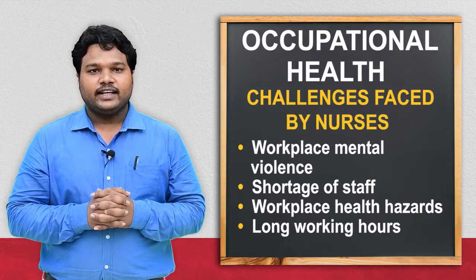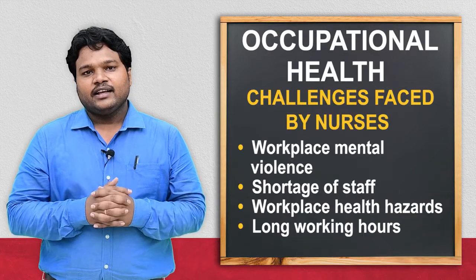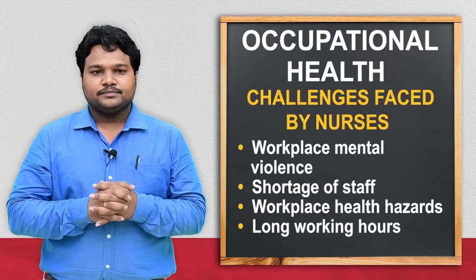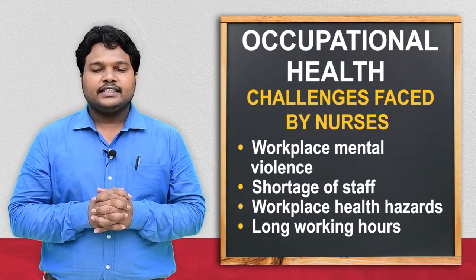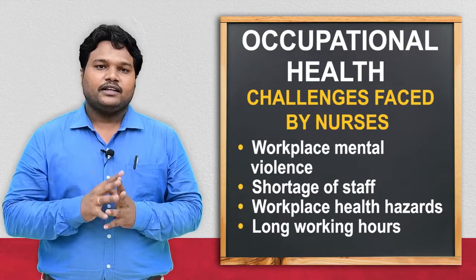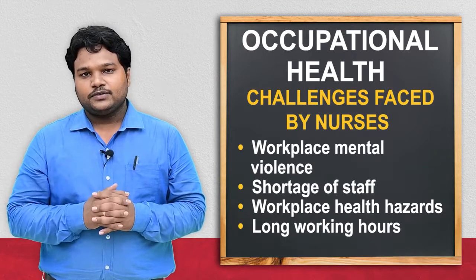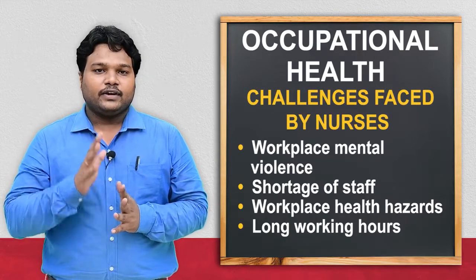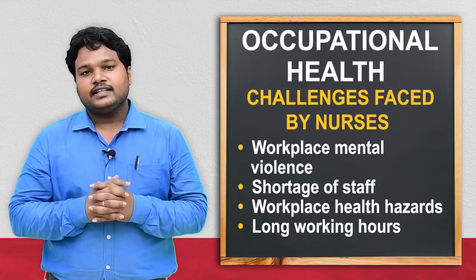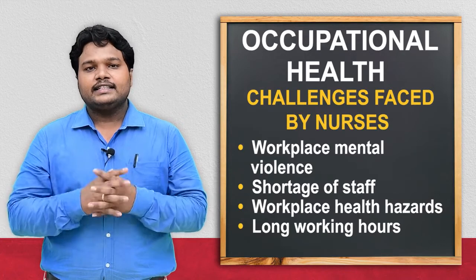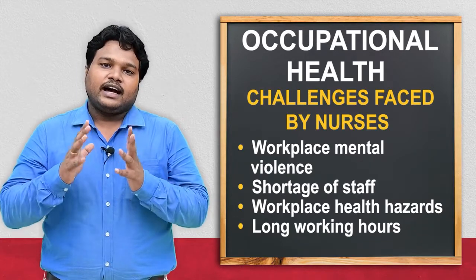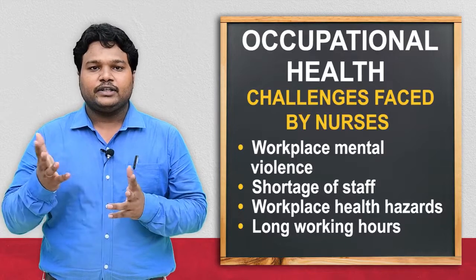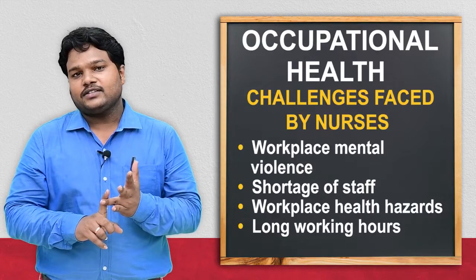The first one is workplace violence. Nurses are working with many healthcare personnel and will have a lot of stress. The second issue is shortage of staff. The INC prescribed a staffing pattern — in a 150-bedded hospital, there should be a specific ratio of nursing superintendent, deputy nursing superintendent, and assistant nursing superintendent. In ICUs, a one-to-one patient ratio should be maintained. But nowadays this system is not applicable, so the entire work becomes dependent on a single nurse, making it impossible to work effectively. Both the patient and the health of the staff nurse suffer.